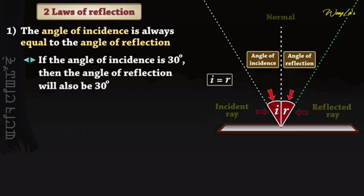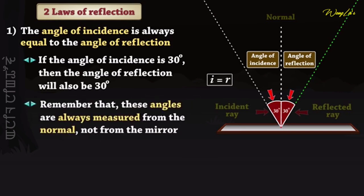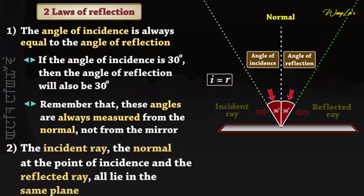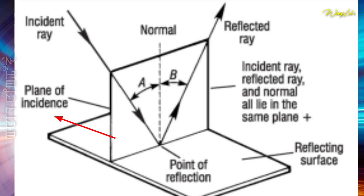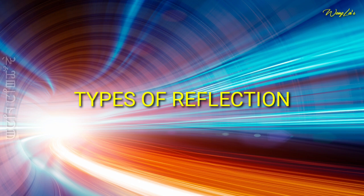If the angle of incidence is 30 degrees, the angle of reflection is 30 degrees — they are the same. The point of incidence, reflected rays, and normal lines always lie in the same plane. The reflection of light follows these consistent rules.